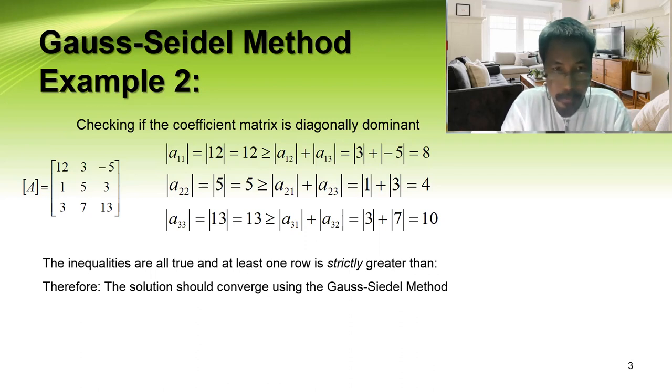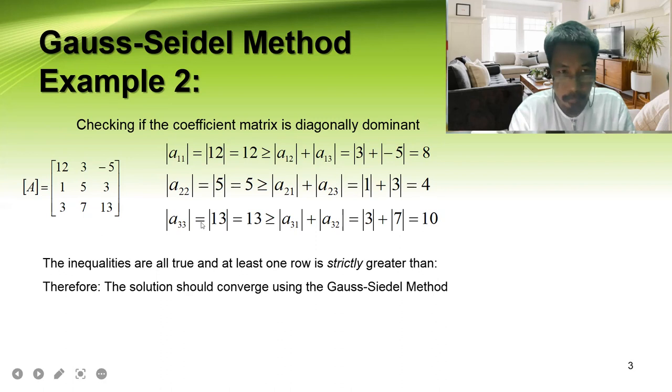So a11 is equal to 12. As you can see, this 12 must be equal or greater than a12 which is 3 plus a13 which is 5, so 8. 12 is greater than 8, so that is correct. And also the next row: a22, which is 5, must be equal to or greater than a21 which is 1 plus 3, which is 4. So 5 is greater than 4.